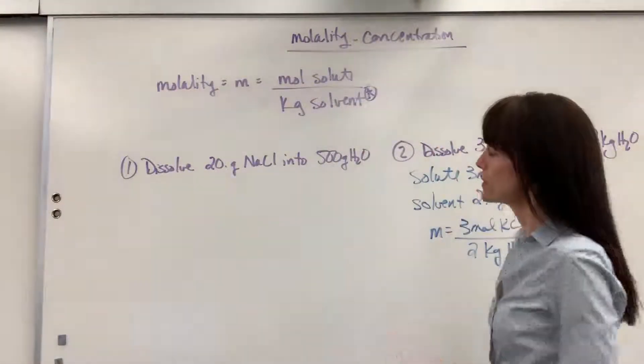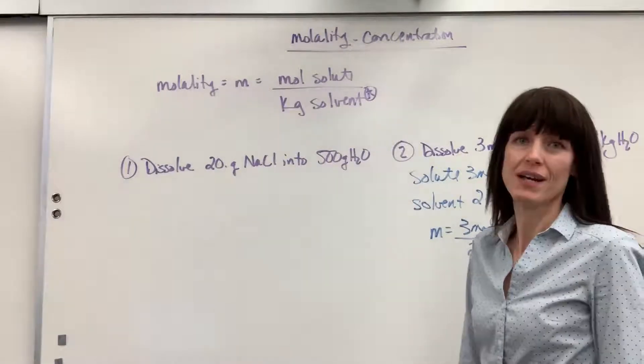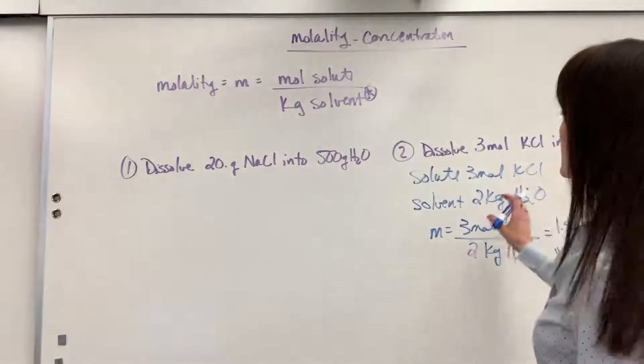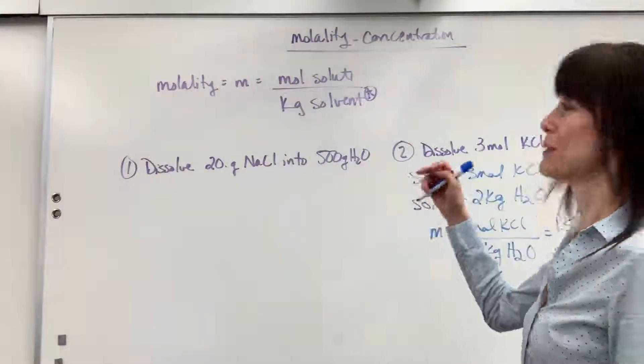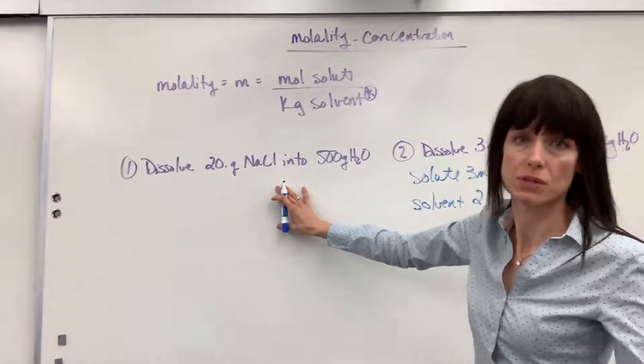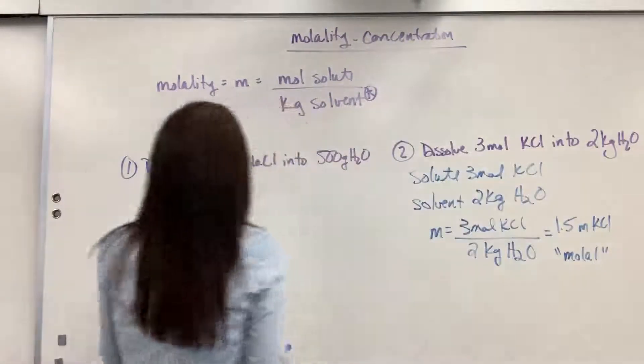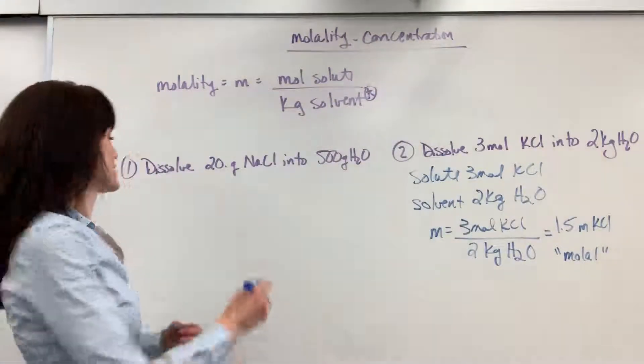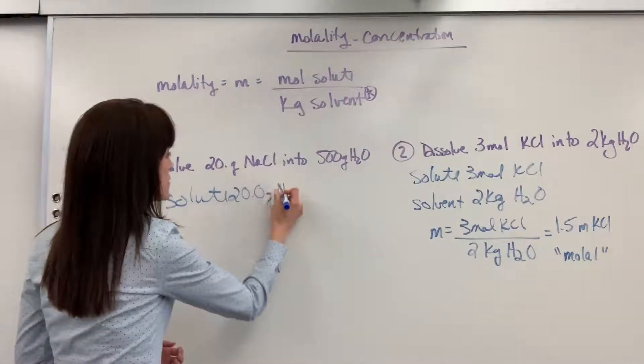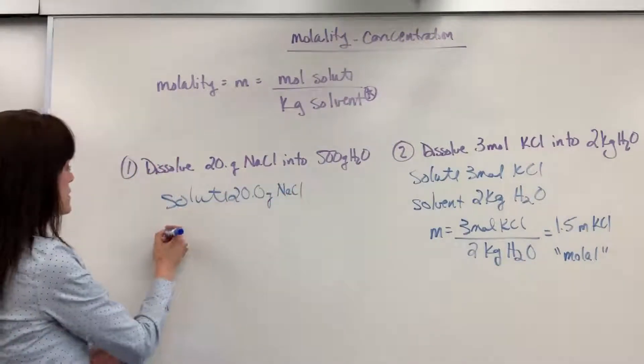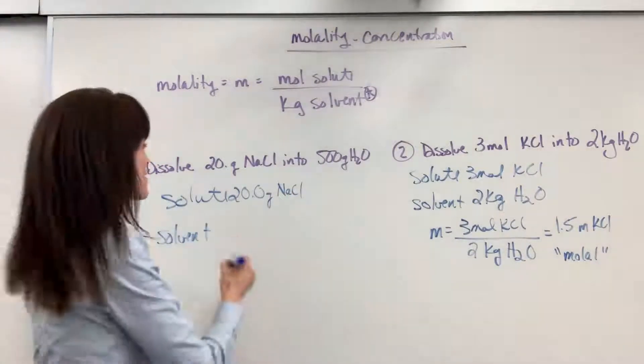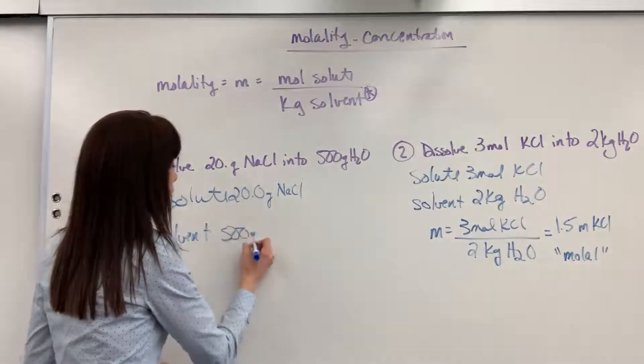So now we're going to dissolve 20 grams of sodium chloride into 500 grams of water. This is more typical of a question you'd be asked. This is really what we would do in the lab. Okay, so my solute was getting dissolved. It is going to be the 20 grams of sodium chloride. And my solvent, what's doing the dissolving, is the 500 grams of water.